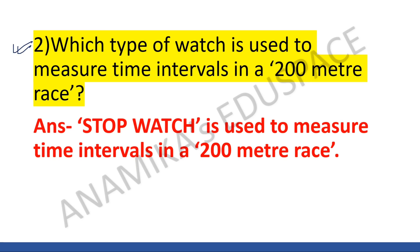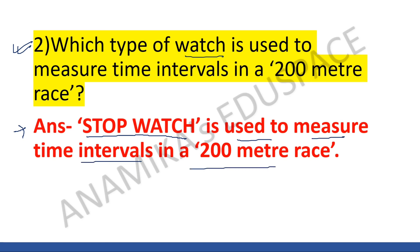Second question: which type of watch is used to measure time intervals in a 200 meter race? The answer is a stopwatch. A stopwatch is used to measure the time intervals in a 200 meter race.